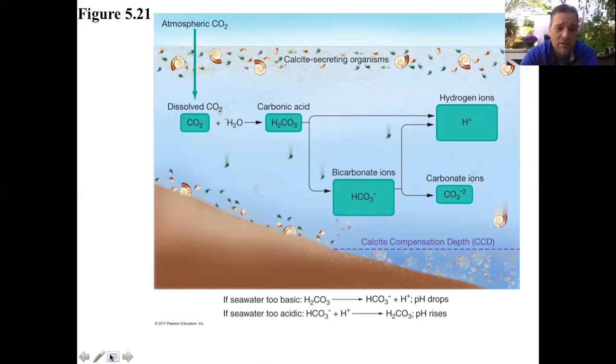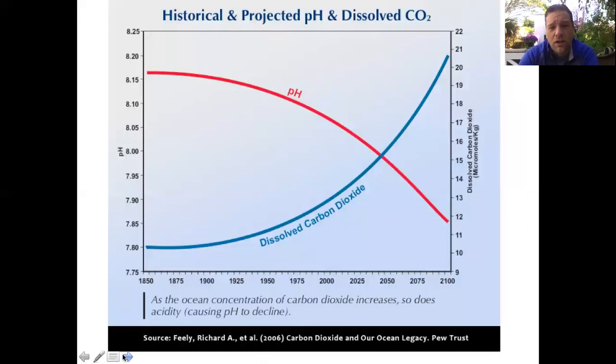Here's a graph to sort of explain that and the relationship between the two. In 1850, the dissolved carbon dioxide content, you can see on this side, is near 10 or 11. And then as we are moving through time, the dissolved carbon dioxide in the atmosphere is increasing.